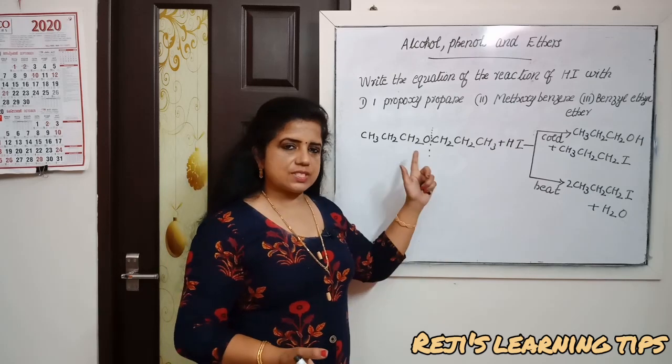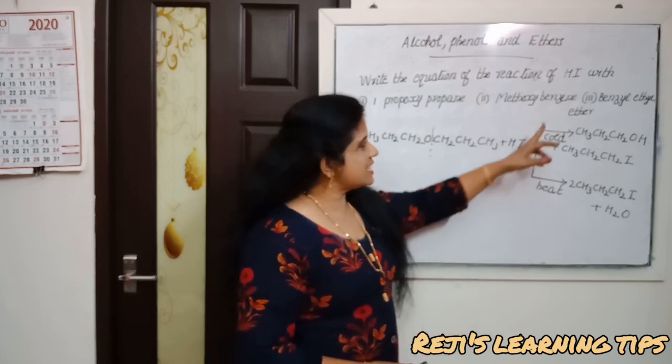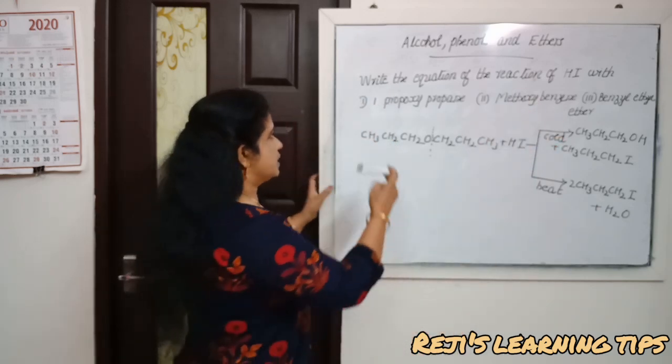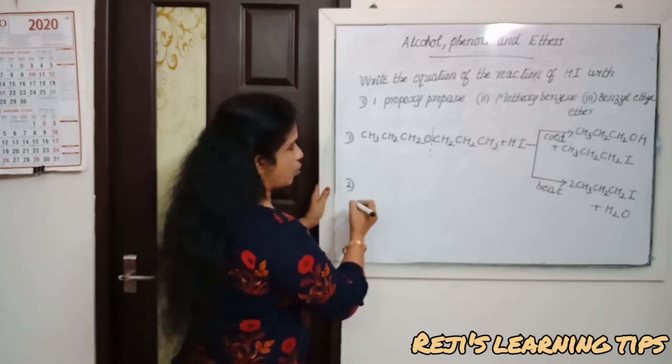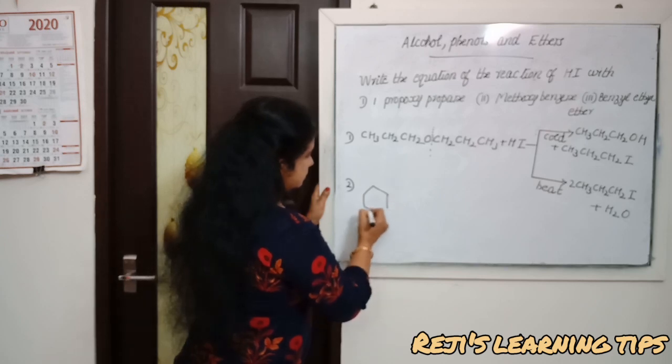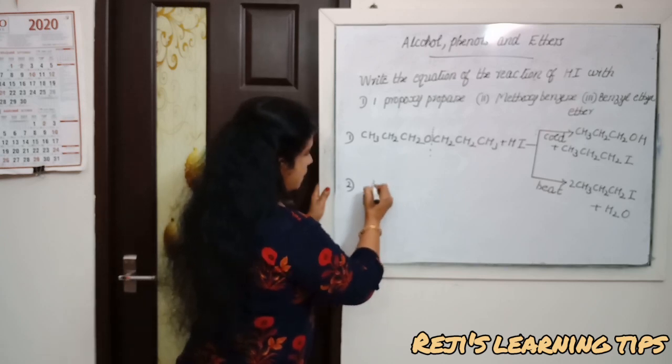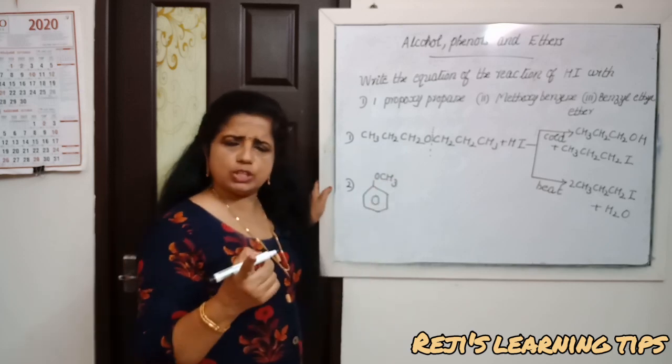The second one is methoxybenzene: O-CH3 attached to benzene. What is the name of methoxybenzene? Correct, anisole. Anisole reacts with HI.